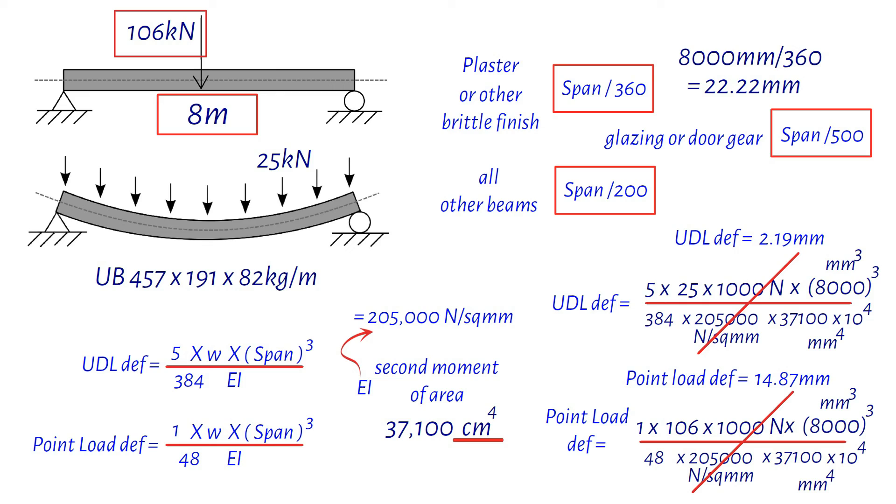So, what's the bottom line? Add those two deflections: 2.19 millimeters plus 14.87 millimeters equals 17.06 millimeters. And guess what? That's under our limit of 22.22 millimeters. So, our beam is more than adequate.